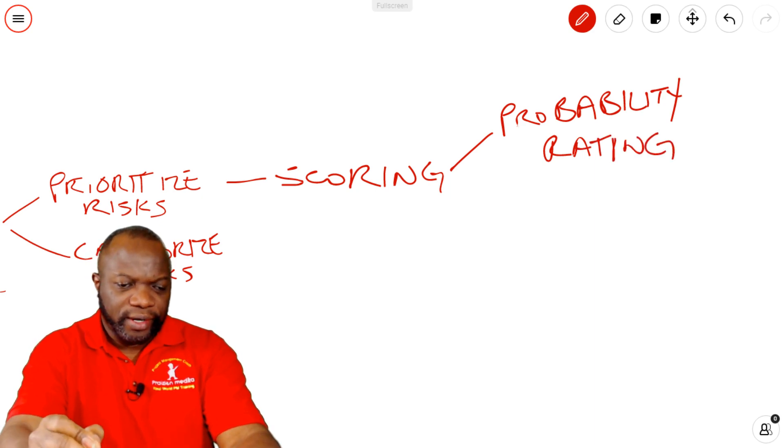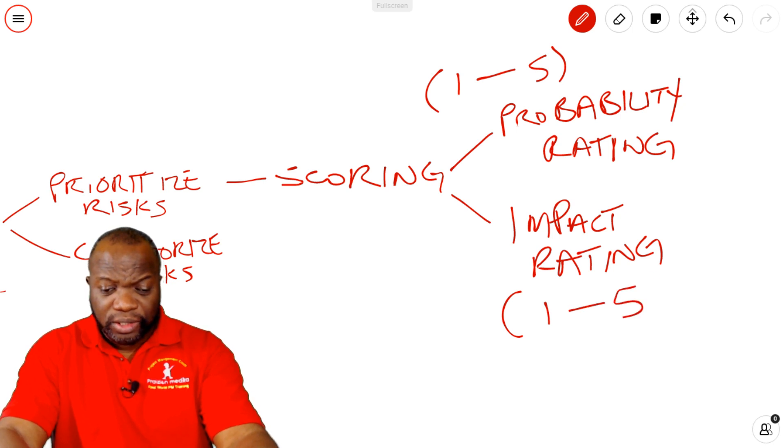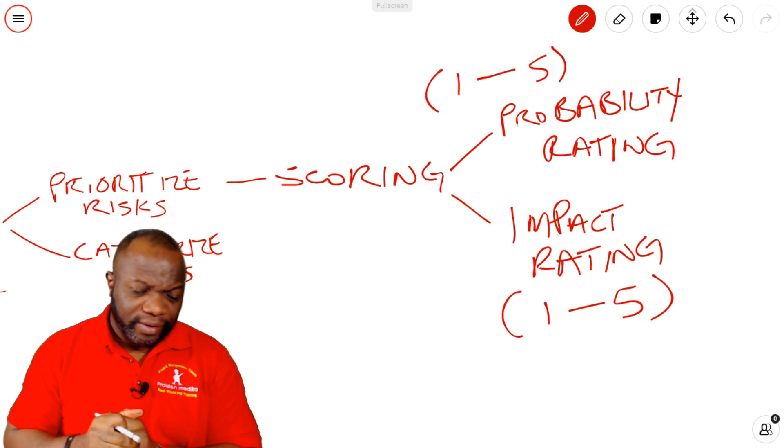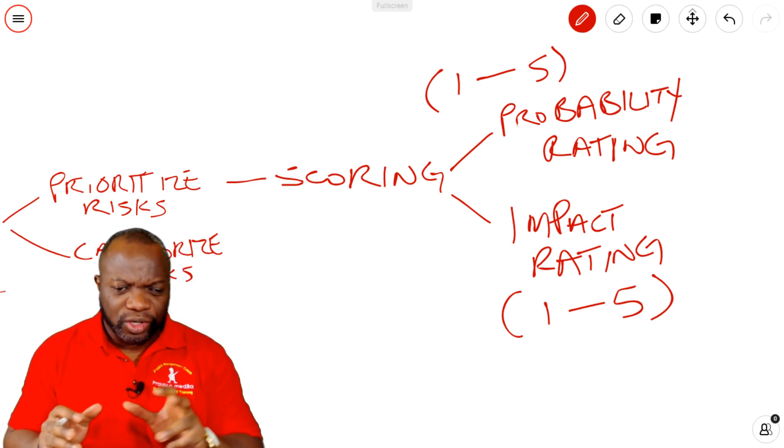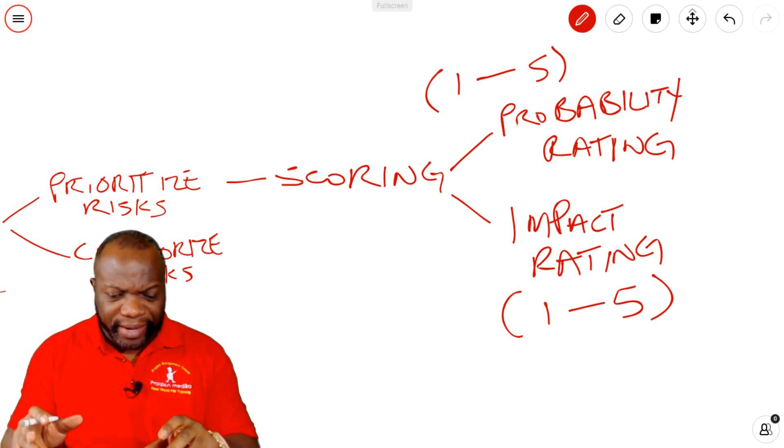And the probability rating could be, say, on a scale of one to five. We talk about an impact rating. And let's say the impact rating was on a scale of one to five to make it simple. Even though in the real world, the impact could be rated differently, like one to ten or one to eight. But the bottom line is, you've got two ratings: probability rating and impact rating.